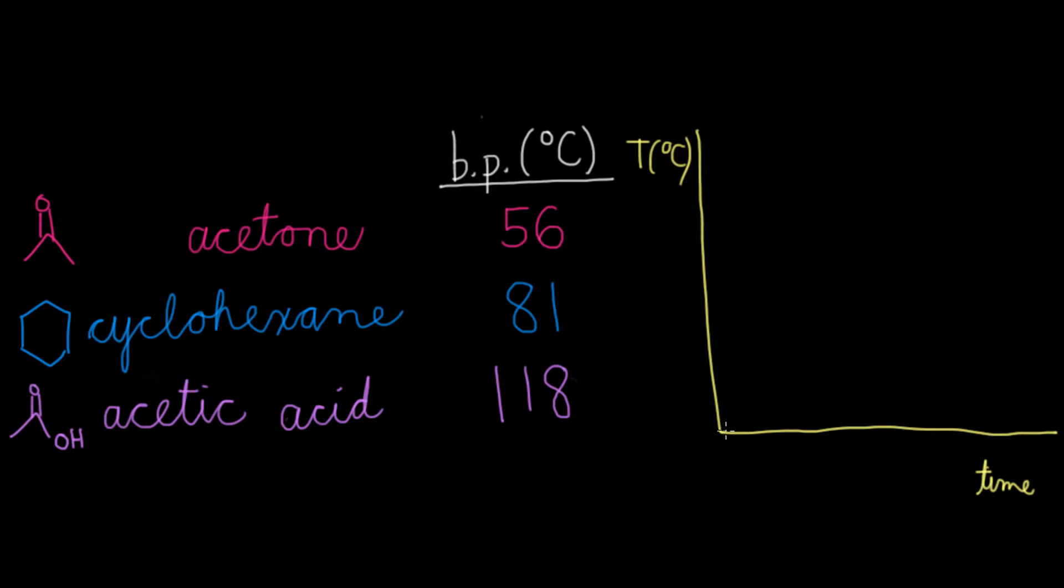First what you might see again is a slight increase at the beginning when you're just heating up your flask. But as soon as you hit 56 degrees, you'll see that plateau as acetone vaporizes and condenses. Then you'll see the temperature increase again until 81 degrees, where it'll hit a plateau. And that represents cyclohexane vaporizing and condensing. Lastly, you'll see another increase. And finally, you'll be able to get acetic acid.